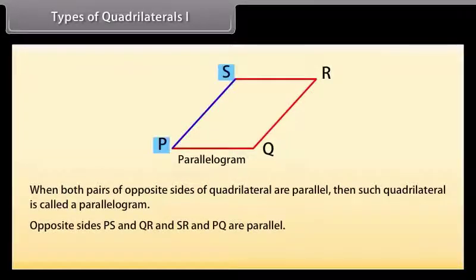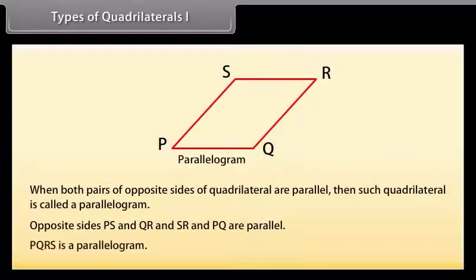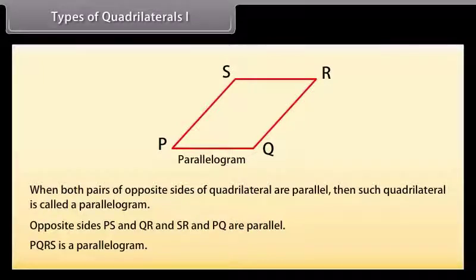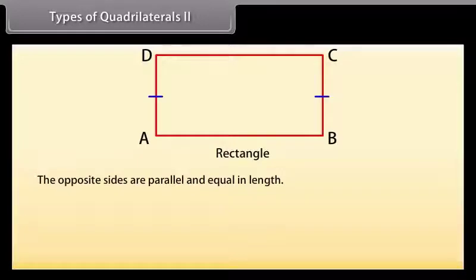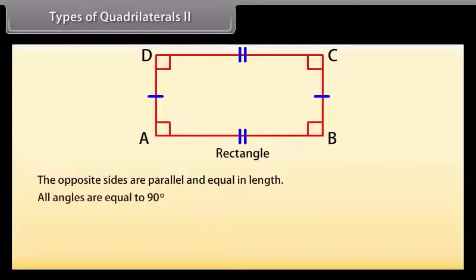Here opposite sides PS and QR, and SR and PQ are parallel, so PQRS is a parallelogram. Now, in a rectangle, the opposite sides are parallel and equal in length, and all angles are equal to 90 degrees.